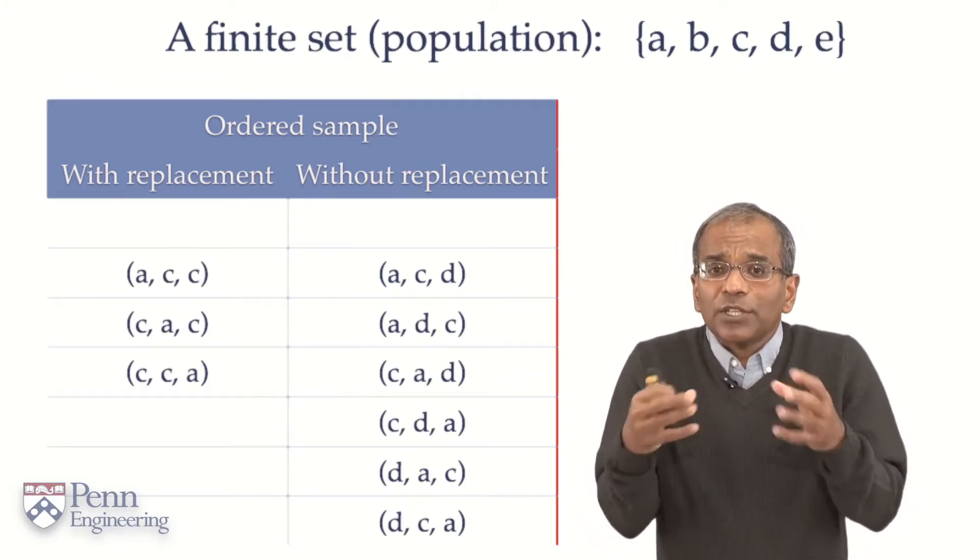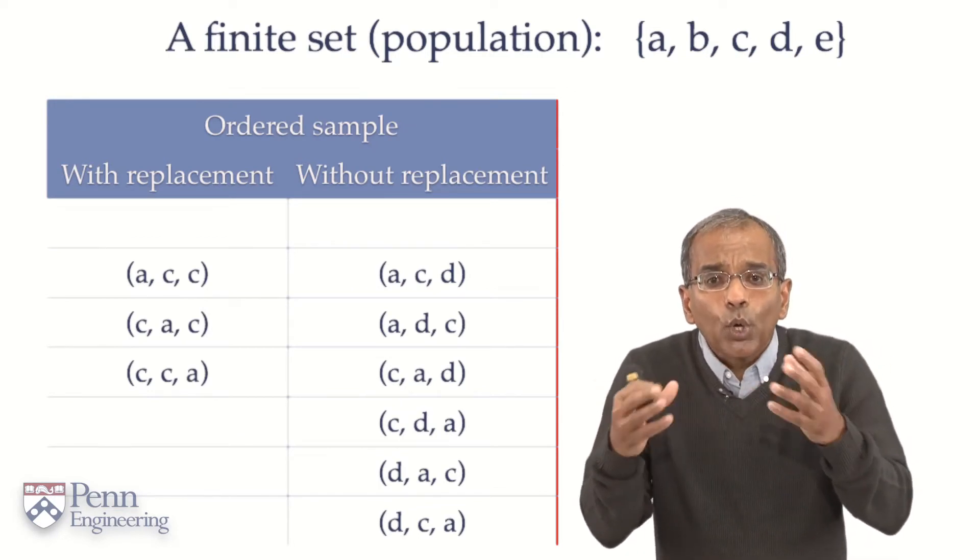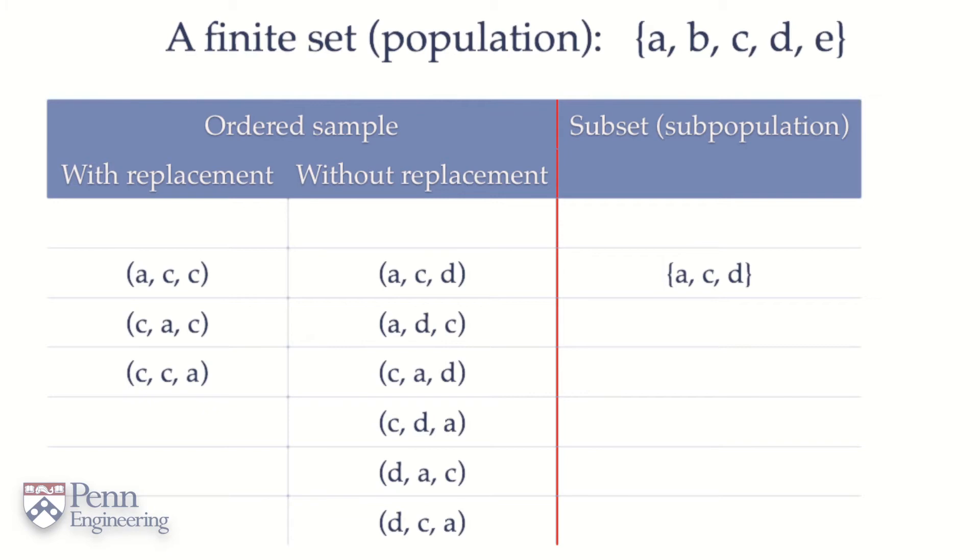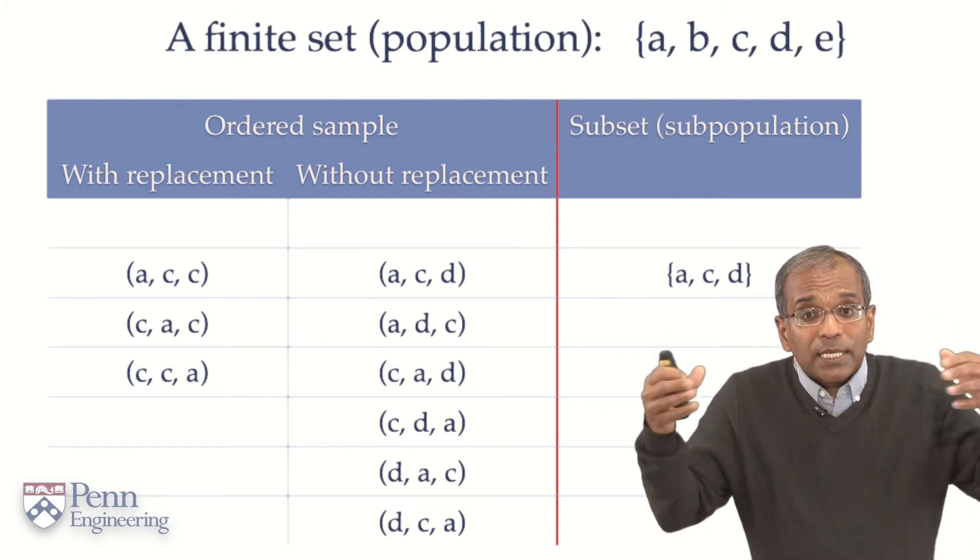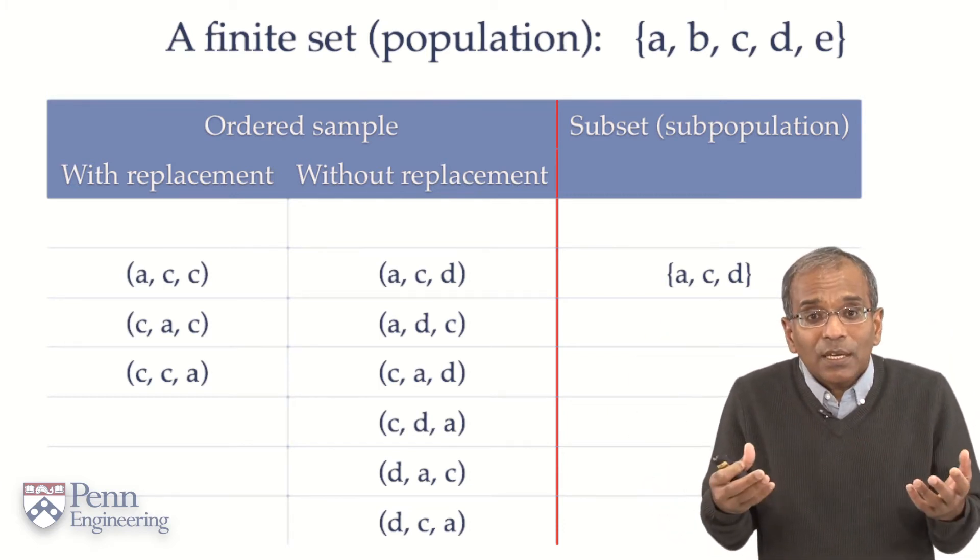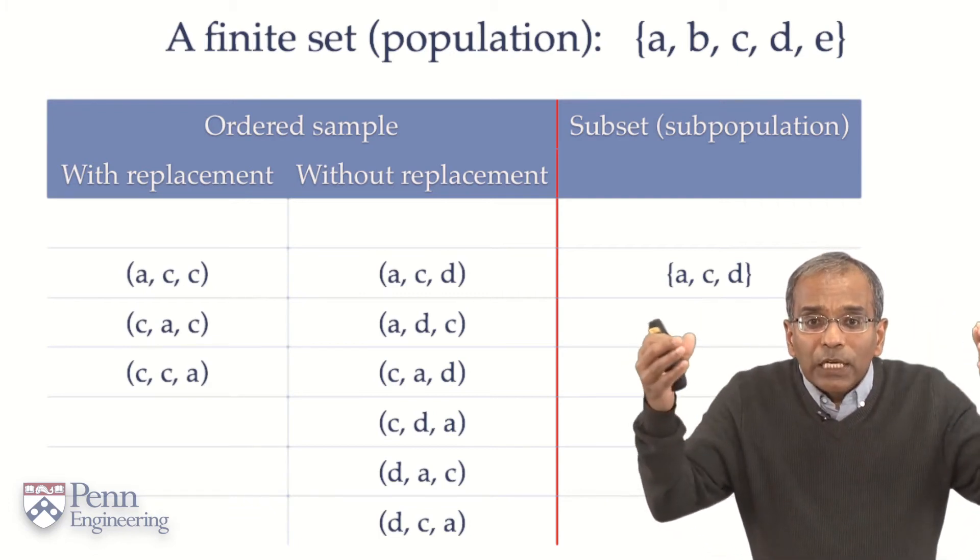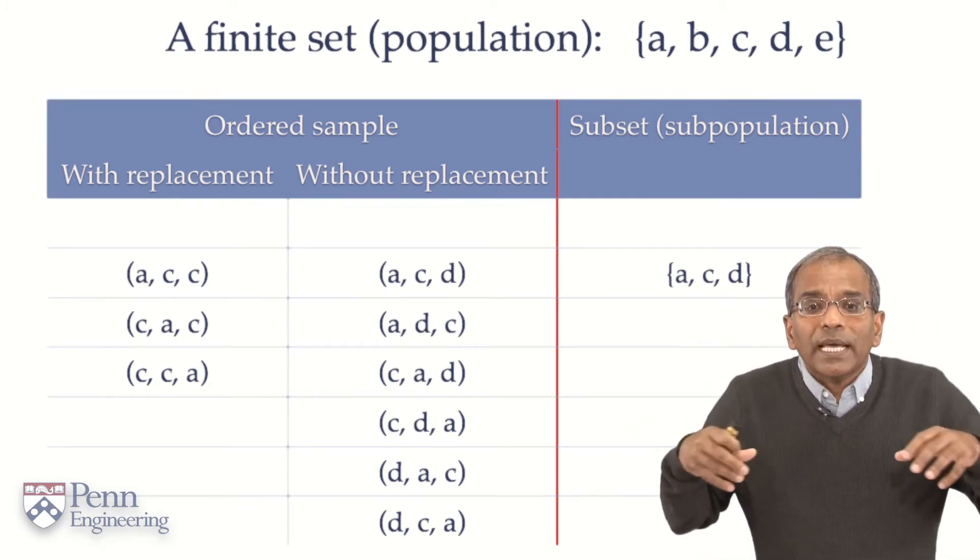How about we select three objects and we do not care about which order we select them? In other words, we select a subpopulation or a subset of the three. In this case, I've given you a subset of three elements, A, C, and D. Notice, visually, I've put curly brackets around those three to indicate that these are three elements and their order of specification does not matter. It is a set.